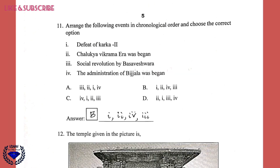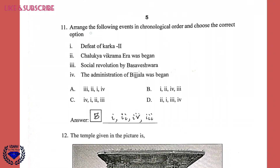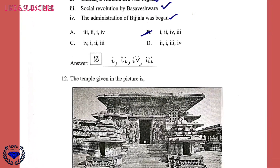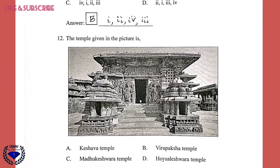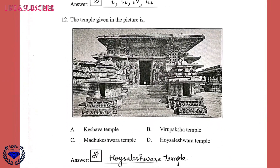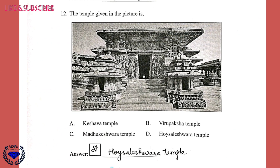Question 11: Arrange the following events in chronological order and choose the correct option. The right answer is B — first, the defeat of Karka I; then the Chalukya Vikrama era began; then the administration of Vijala began; and finally the social revolution by Basaveshwara. Question 12: The temple shown in the picture is the Vaishwara temple — that is option D.